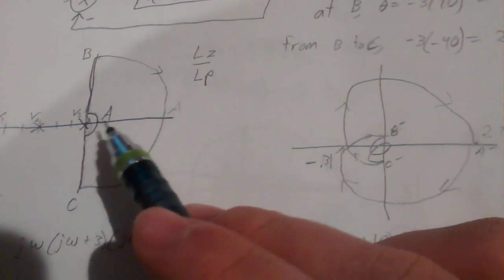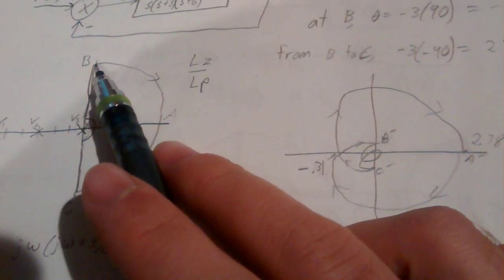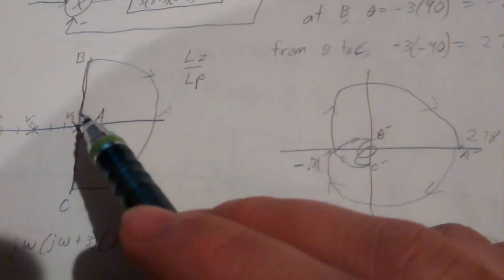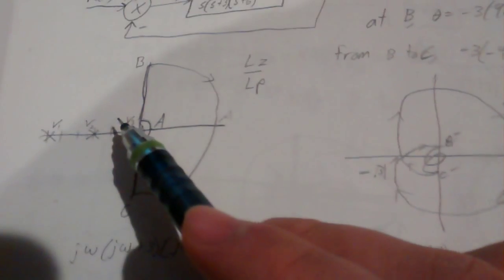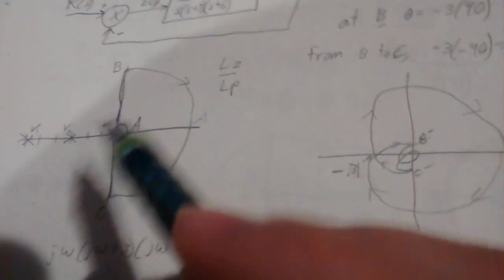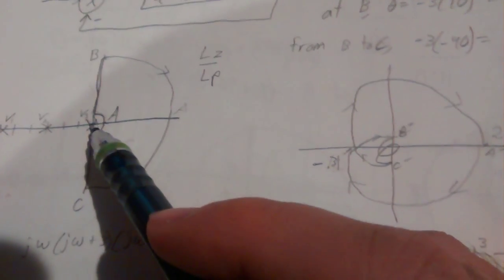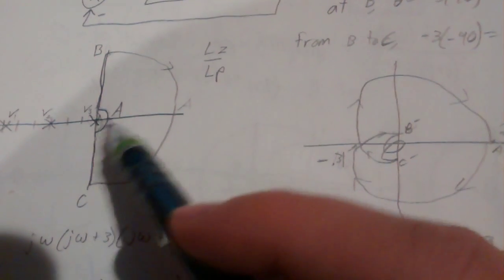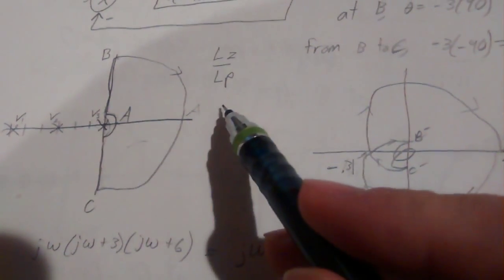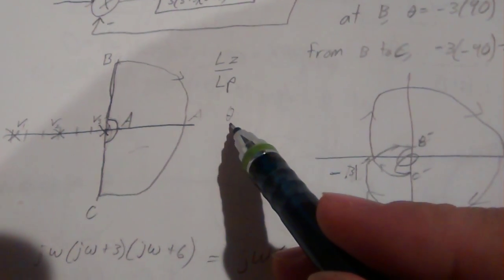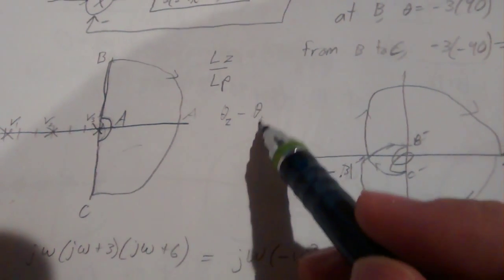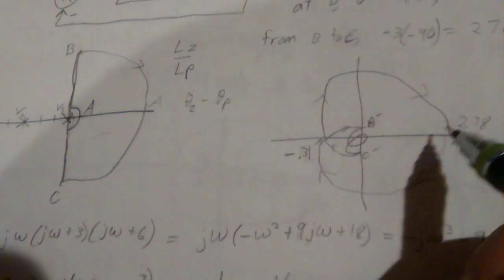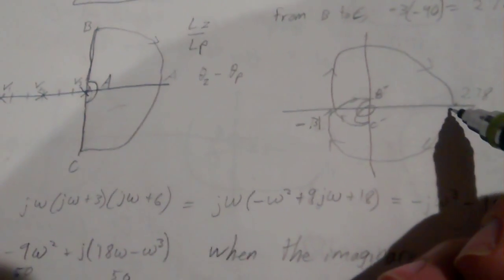As we move up to point B, going up the j omega axis to infinity, for point A, the angle relative to all three poles is 0. It's the angle of the zeros minus the angle of the poles, and that's the angle we draw here, so it's 0.